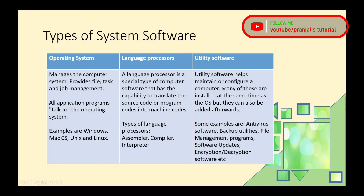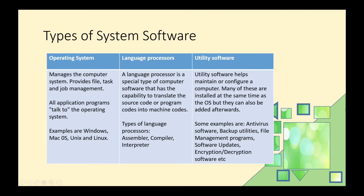Types of system software: there are three types. First, operating system. Second, language processors. Third, utility software.